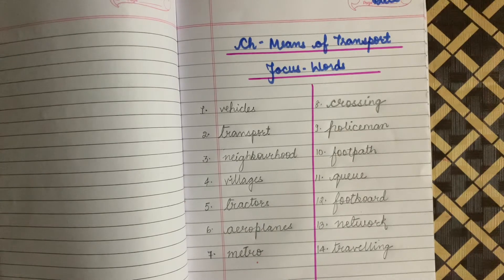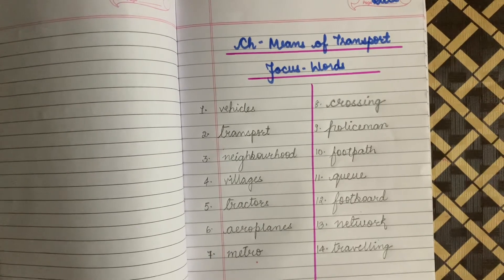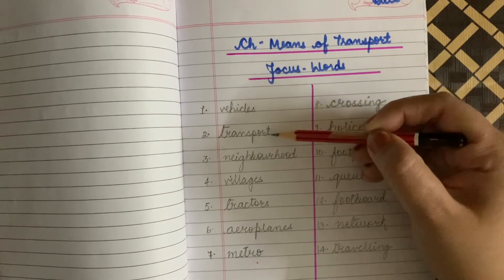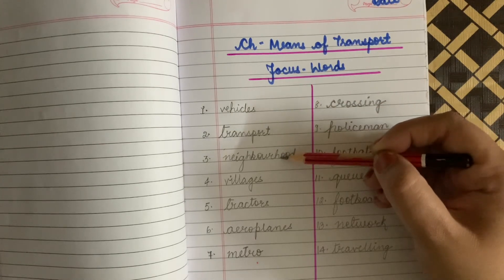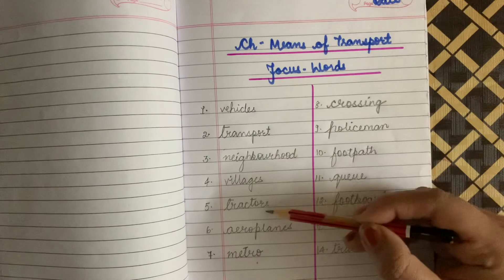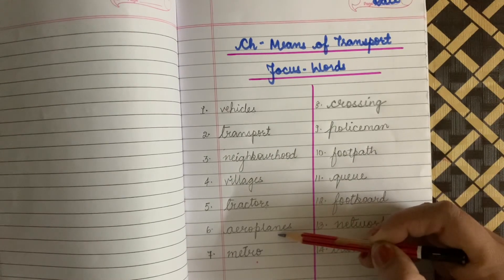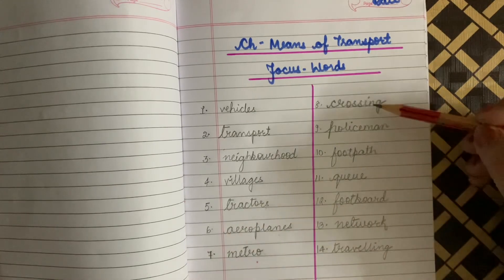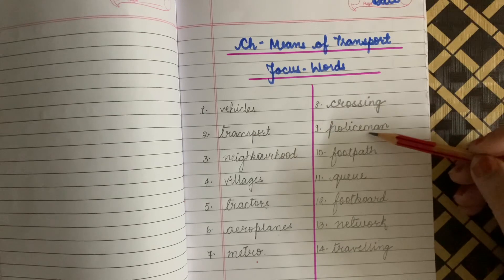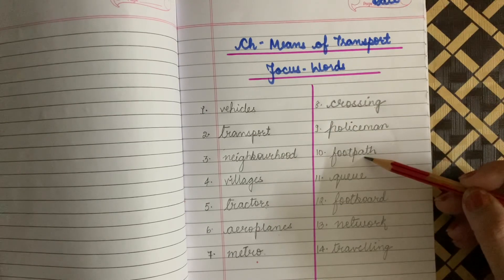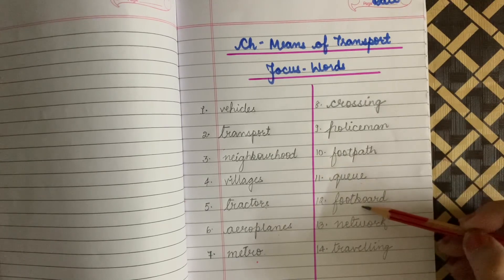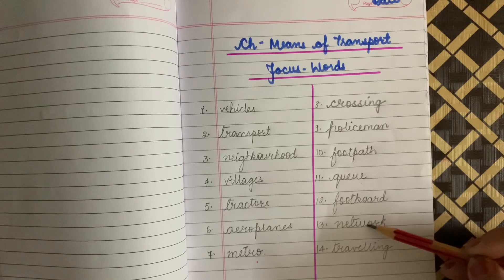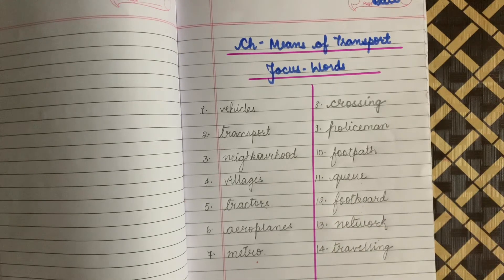So that's all for today children. You have to note down the focus words in your notebook neatly with cursive writing. We'll repeat them once again: 1. Vehicles, 2. Transport, 3. Neighbourhood, 4. Villages, 5. Tractors, 6. Aeroplanes, 7. Metro, 8. Crossing, 9. Policeman, 10. Footpath, 11. Queue, 12. Footboard, 13. Network, 14. Travelling. Note down these words in your fair notebook and learn them. We'll start question answers from tomorrow. Bye bye and take care.